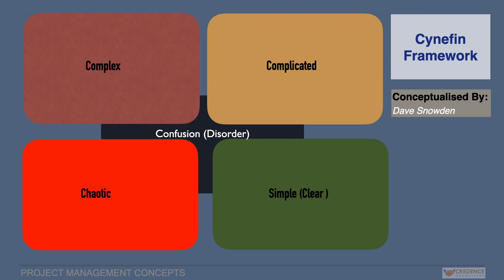It is a conceptual framework for decision-making, which is explained with five domains contexts, namely, clear, complicated, complex, chaotic, and confusing. Any problem or situation can be fit into these five domains and can be analyzed. Decision-making becomes easy.